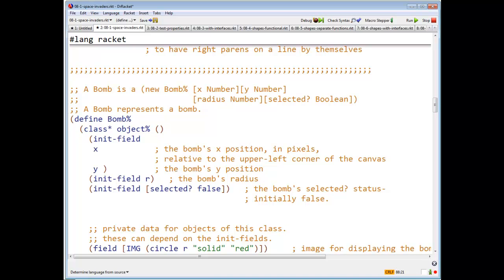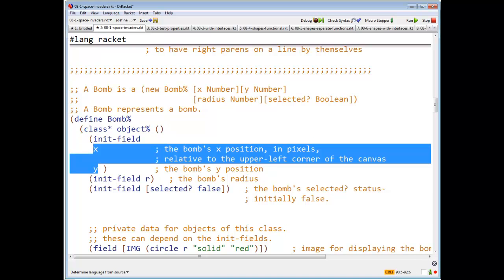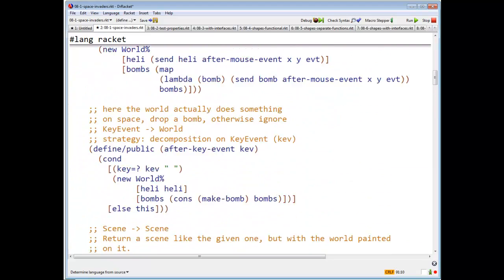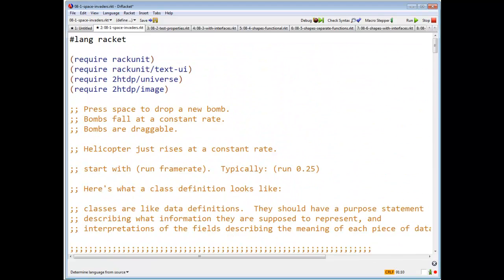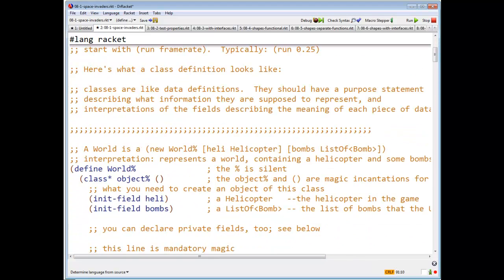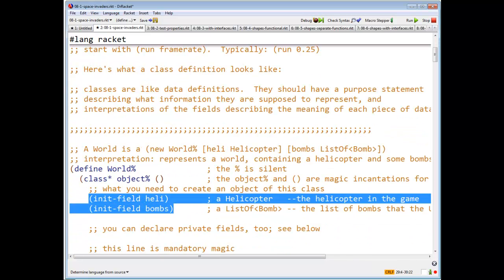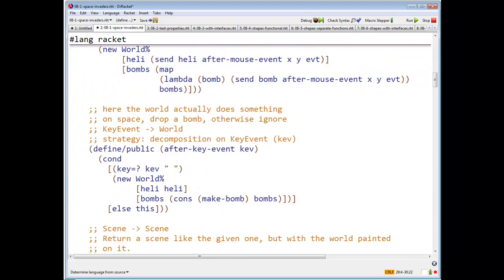And so here we have the BOM's X position and the BOM's Y position. Notice I've written it this way to illustrate that you don't actually need to have a separate init field. Here I've written separate init field declarations for each of the fields, but I don't have to do that.